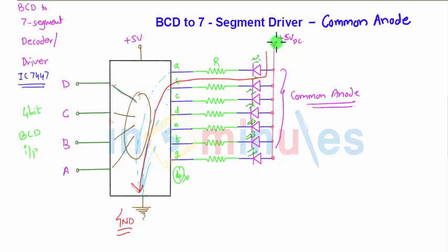BCD number 0 to 9. So that's all about the BCD to 7 segment decoder driver driving common anode display.